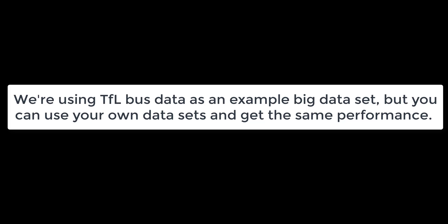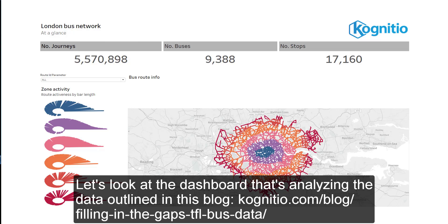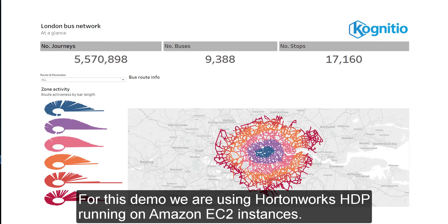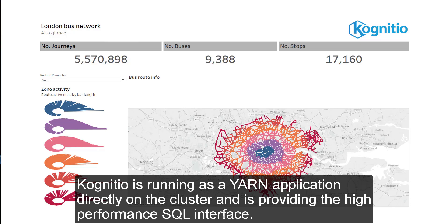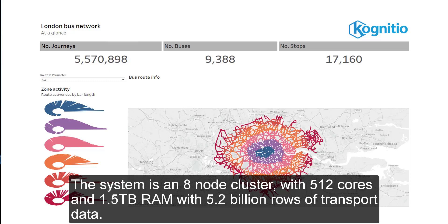We're using TFL bus data as our big dataset, but you can use your own dataset and get the same performance. During this demo, every time we drill into something in the Tableau dashboard and get an answer, we're interactively querying data in Hadoop using Tableau and Cognitio. For this demo, we are using Hortonworks HDP on Amazon EC2 instances. Cognitio is running as a YARN application directly on the cluster and is providing a high-performance SQL interface. Tableau is connected directly to Cognitio. The system is an 8-node cluster with 512 cores and 1.5 terabytes of RAM, with 5.2 billion rows of transport data.